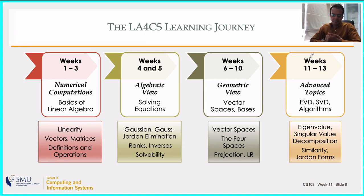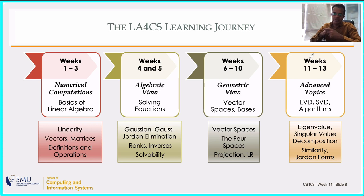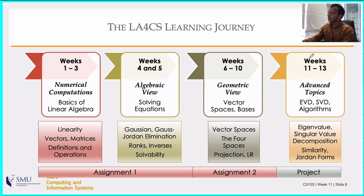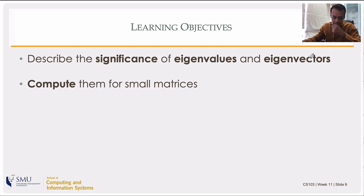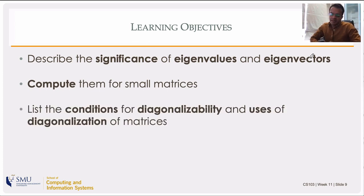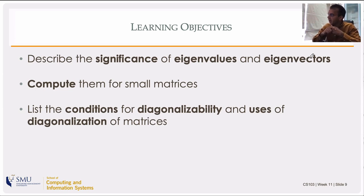These topics are advanced only in the sense that mathematically, they have to come after everything else is done — but they're not advanced in terms of how they're used in computer science. The objectives for today are to understand eigenvalues and eigenvectors, describe the significance of eigenanalysis, perform eigenanalysis for small matrices, and use eigenvalue decomposition — writing a matrix in terms of its eigenvectors and eigenvalues — a process called diagonalization, including the conditions for diagonalizability.